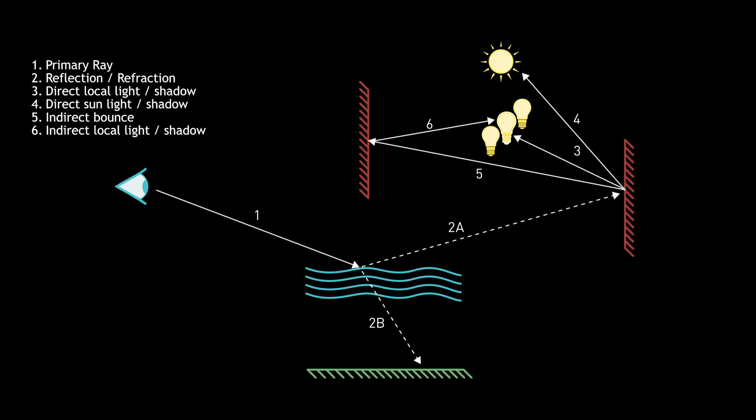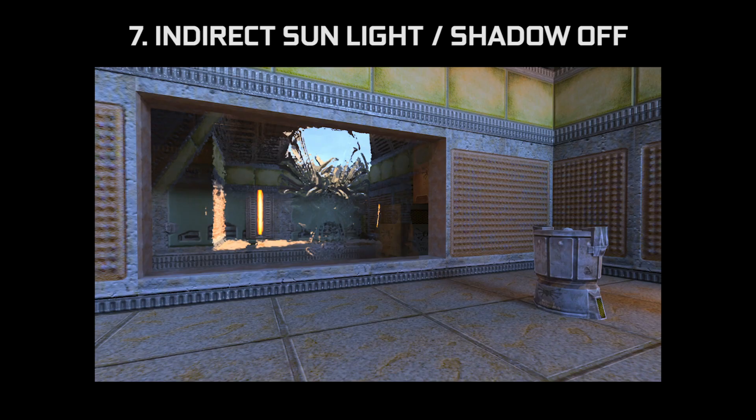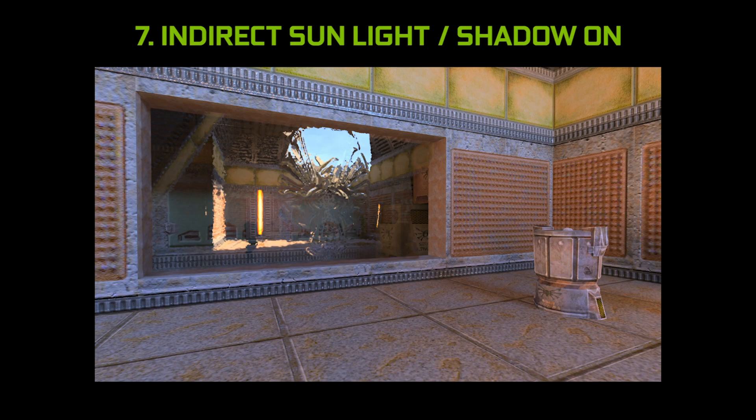The final step for the path tracer here is to compute the indirect sunlight. So we take the bounce from that surface, trace the ray to the sun, and compute light and shadow just as we've done before. You can see here it has a much larger impact on the scene, and it gives that scene a much more global illumination feel to it.